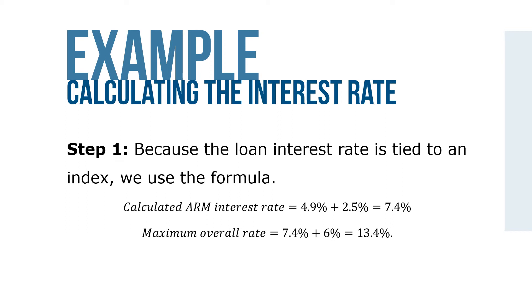In this case, the calculated ARM interest rate equals 4.9% plus 2.5%, for a total of 7.4%. The maximum overall rate is 7.4% plus 6%, which equals 13.4%.